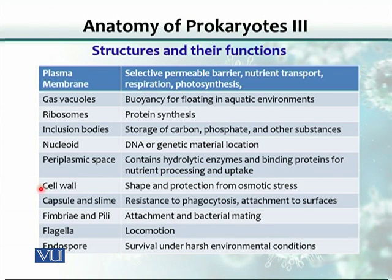The periplasmic space contains hydrolytic enzymes and binding proteins for nutrient processing and uptake. The next structure is the cell wall. Because it is rigid chemically, it provides stability to the shape of the organism and also protection from osmotic stress.